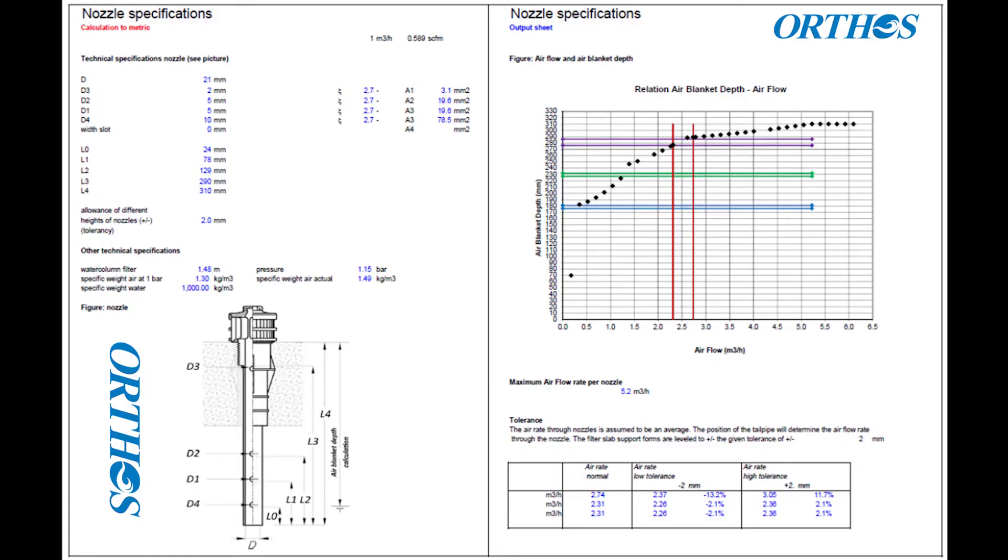Orthos has developed a proprietary calibrated software model that calculates blanket depths at varying airflow rates for a specific nozzle tailpipe construction.